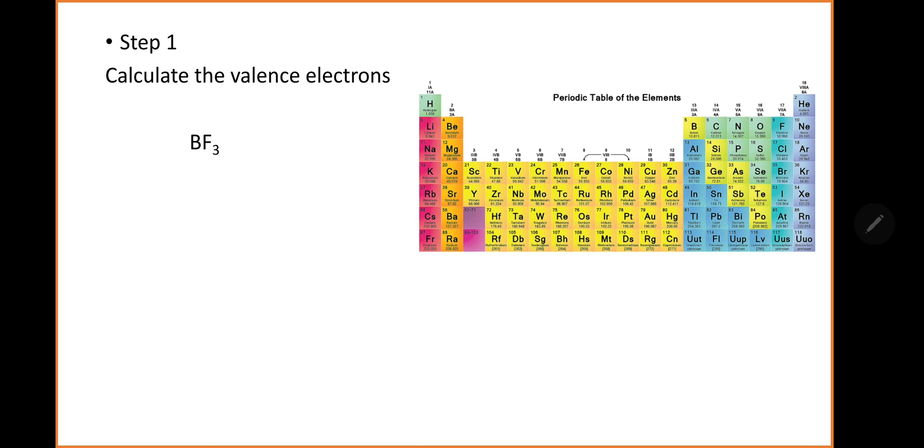We get the periodic table, write down the formula. Let's look at the corresponding groups. Boron is in group 3, fluorine is in group 7. So the corresponding valence electrons will be 3 and 7.